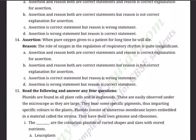Question 14 Assertion: When pure oxygen is given to a patient for a long time, he will die. Reason: The role of oxygen in the regulation of respiratory rhythm is quite insignificant. Options: (A) Assertion and reason both correct, R is correct explanation for A; (B) A and R both correct but R is not correct explanation for A; (C) A is correct but R is wrong; (D) A is wrong but R is correct.